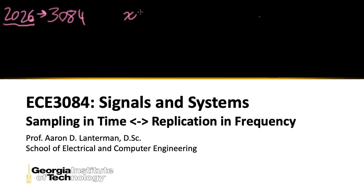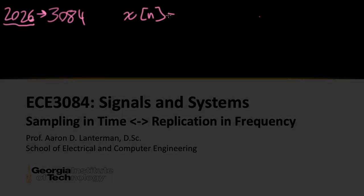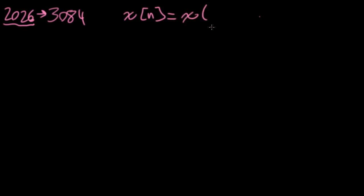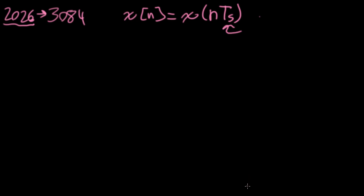The general idea is that we take some sort of signal that's continuous time, usually represented as x of t, and then make a slight abuse of notation and evaluate the signal at evenly spaced samples in time that are spaced according to some sampling period, capital TS. In a slight abuse of notation, we wrote the discrete time versions of the signal using x with brackets for an integer index n.